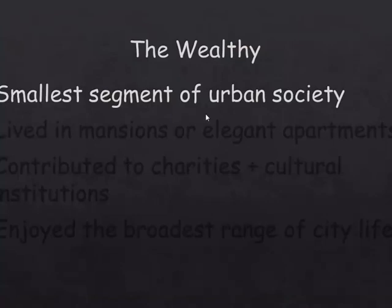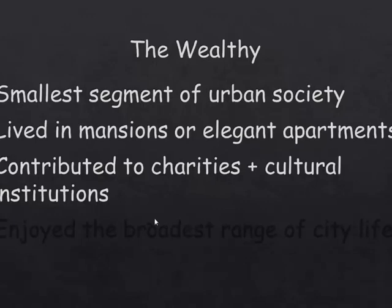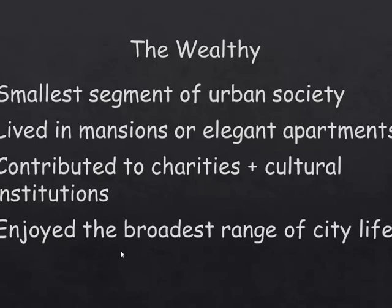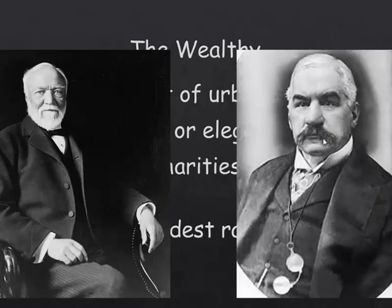The wealthy are the smallest segment of urban life in the cities. They lived in huge mansions or large elegant apartments at the top of a building. They had extra money, so they contributed to charities and cultural institutions, and enjoyed the broadest range of city life — lavish dinners, all the sporting events. That's Andrew Carnegie, one of the wealthiest men in America in the late 1800s. And J.P. Morgan bought Carnegie Steel and turned it into U.S. Steel, America's first billion-dollar-a-year enterprise.